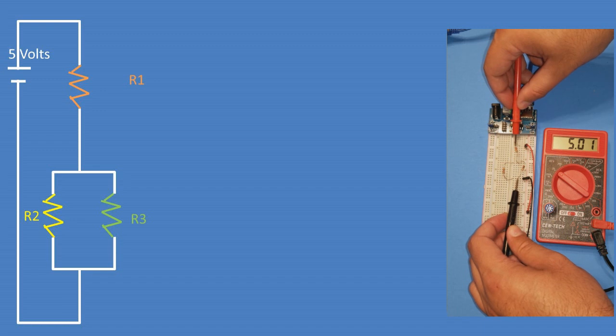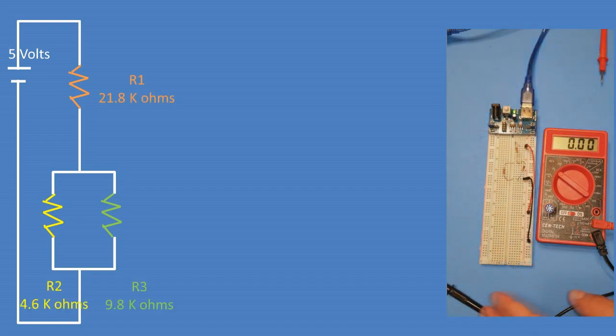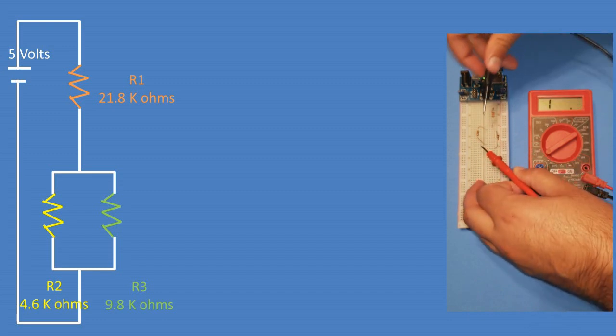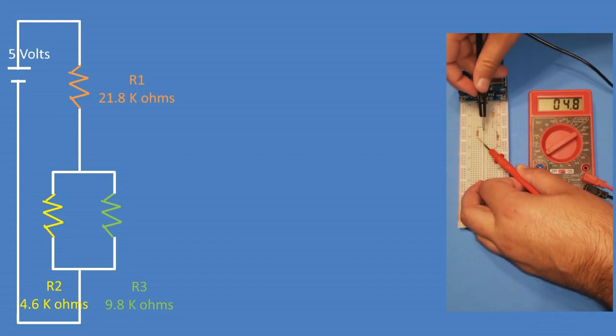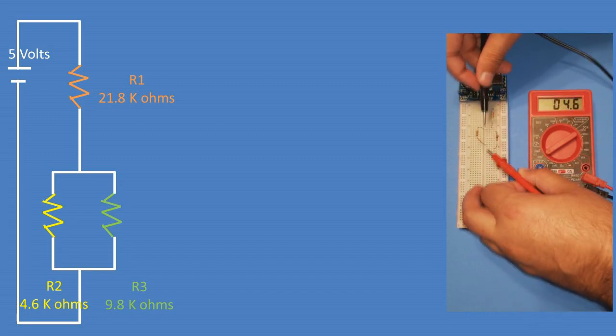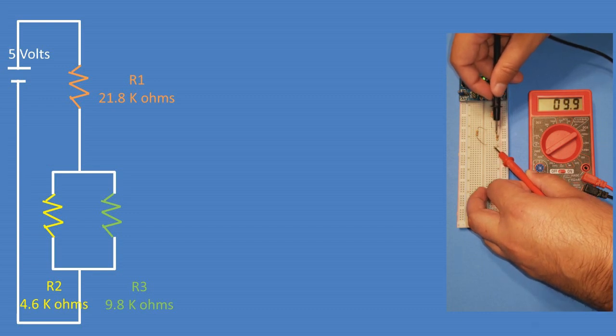As per the measurement, there is 5 volts going to the circuit. And the resistors' values are 21.8 kOhms for resistor 1, 4.6 kOhms for resistor 2, and 9.8 kOhms for resistor 3.